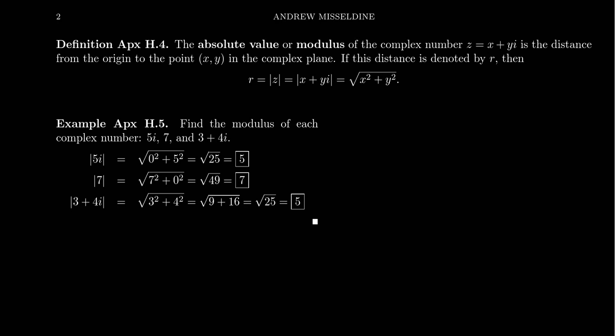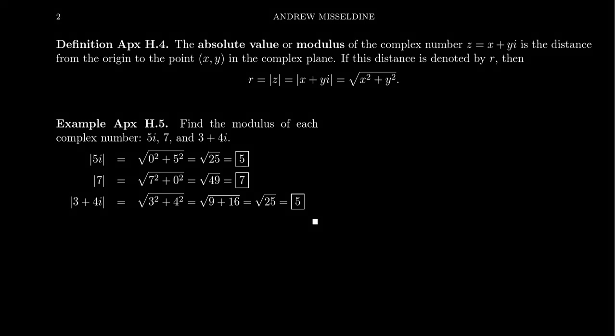Take a complex number z equals x plus yi. We use x for the real part and y for the imaginary part, because we often think of complex numbers as points in the complex plane — the horizontal being the real part and the vertical being the imaginary part. Given these points in the plane, we can measure their distance from the origin, which is commonly referred to as the modulus of a complex number.